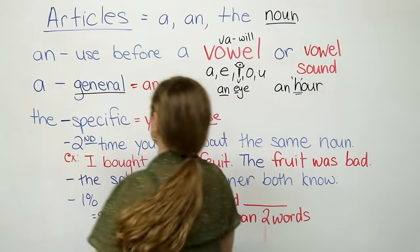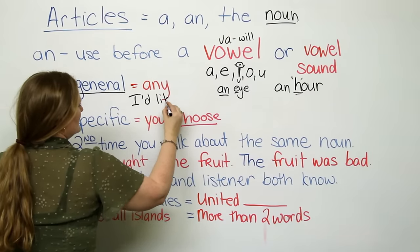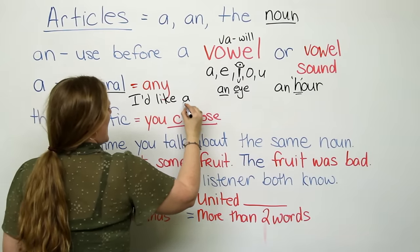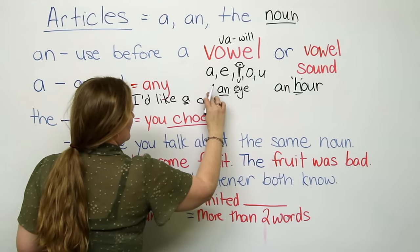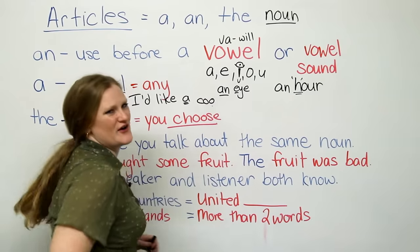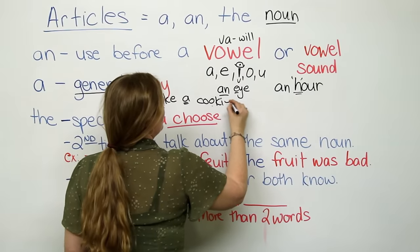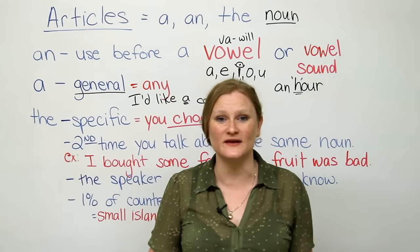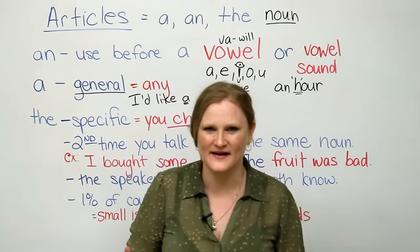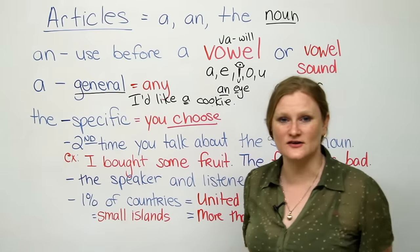As an example, you can say, I'd like a cookie. I was going to write coffee. Maybe I want a coffee right now. But I would definitely rather have a cookie. I don't care which cookie you give me. Just give me a cookie. I'm a cookie monster. Okay? So, I'd like a cookie. I'd like any cookie.